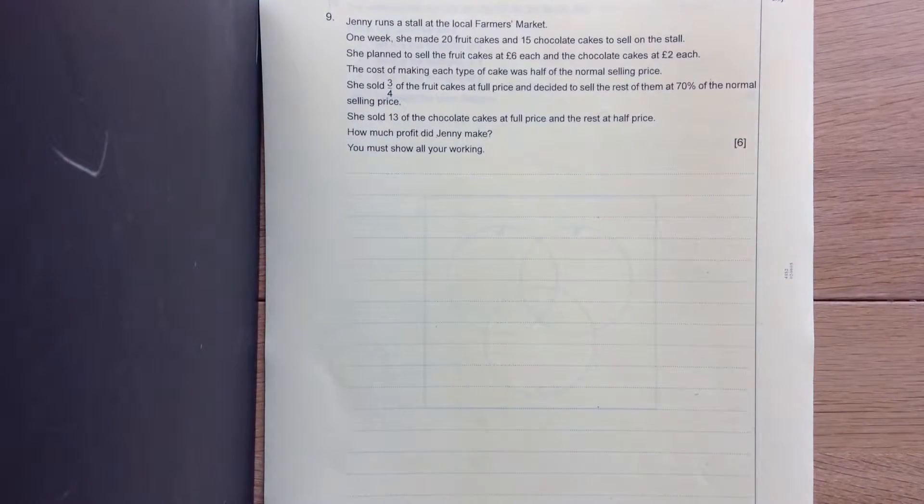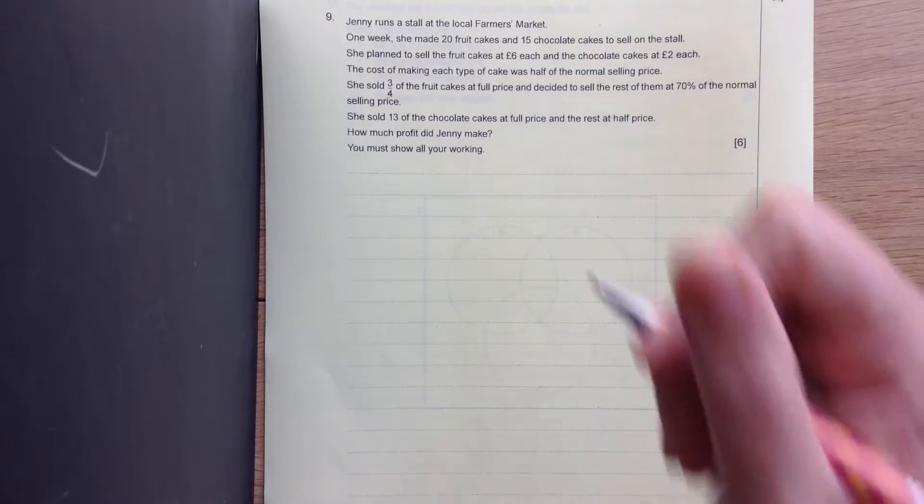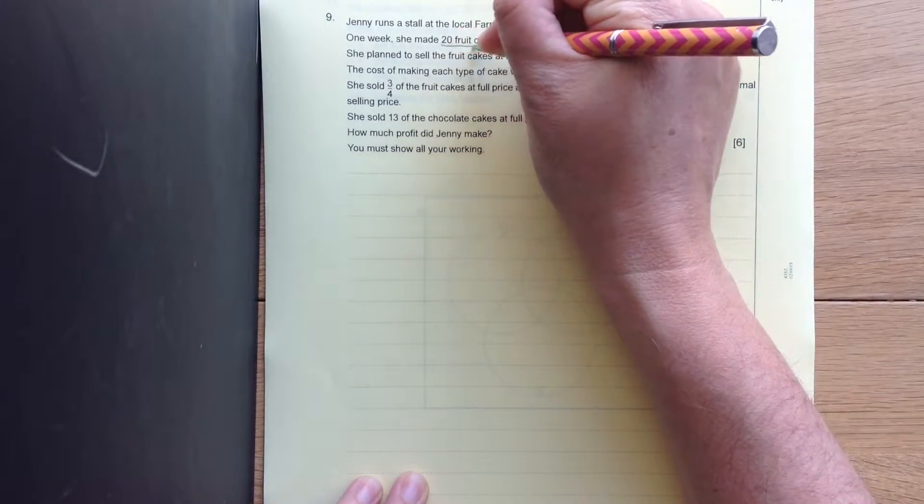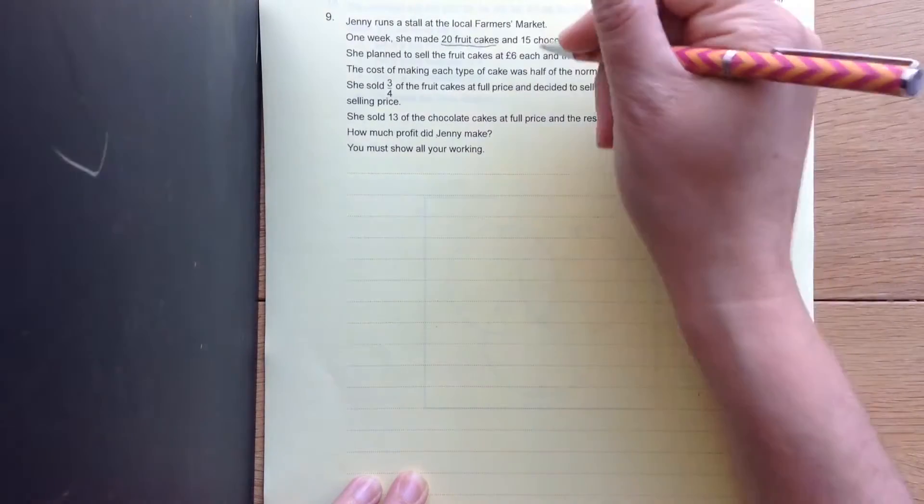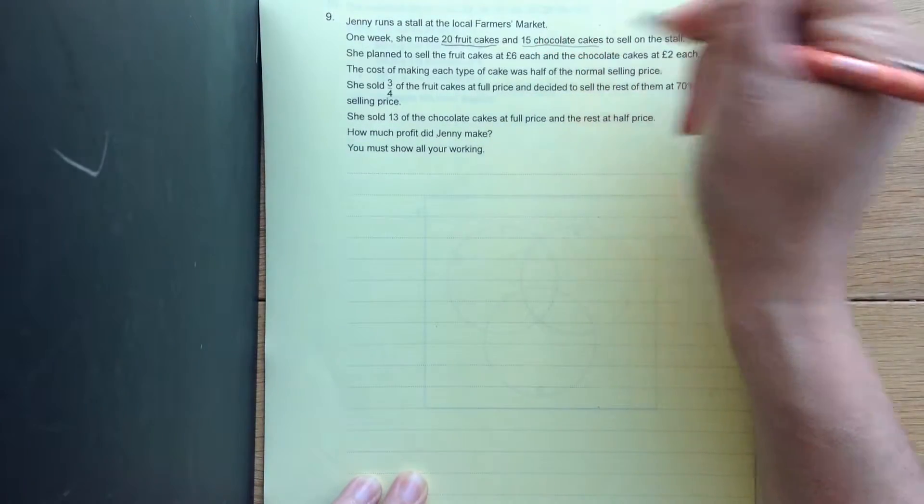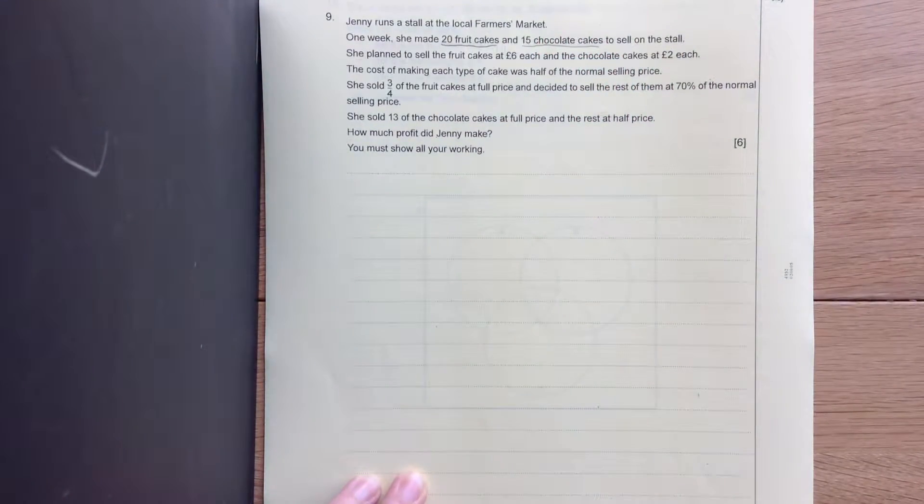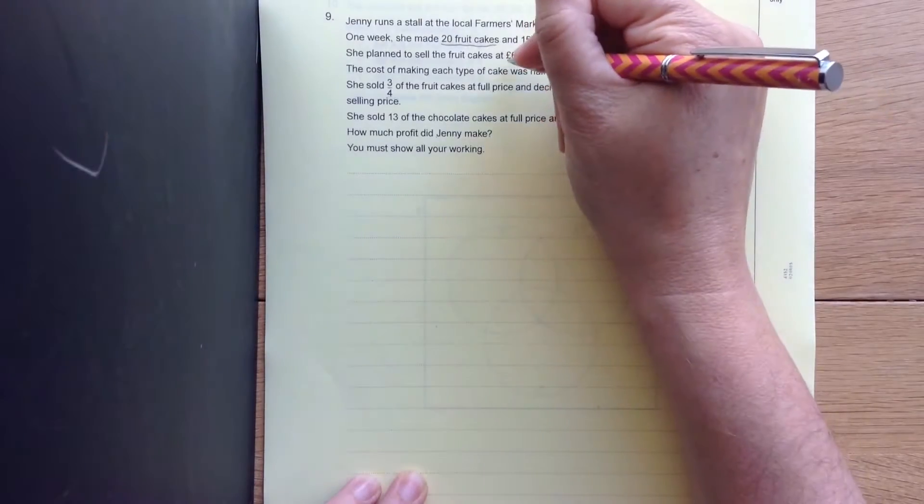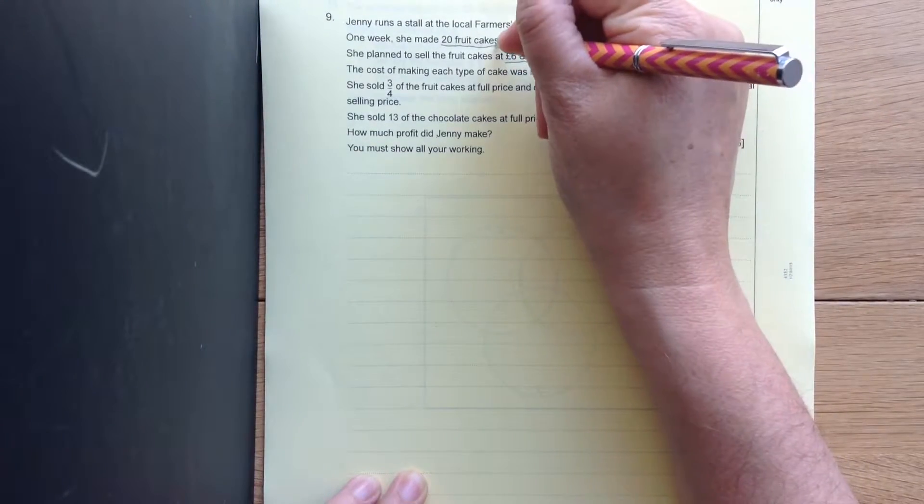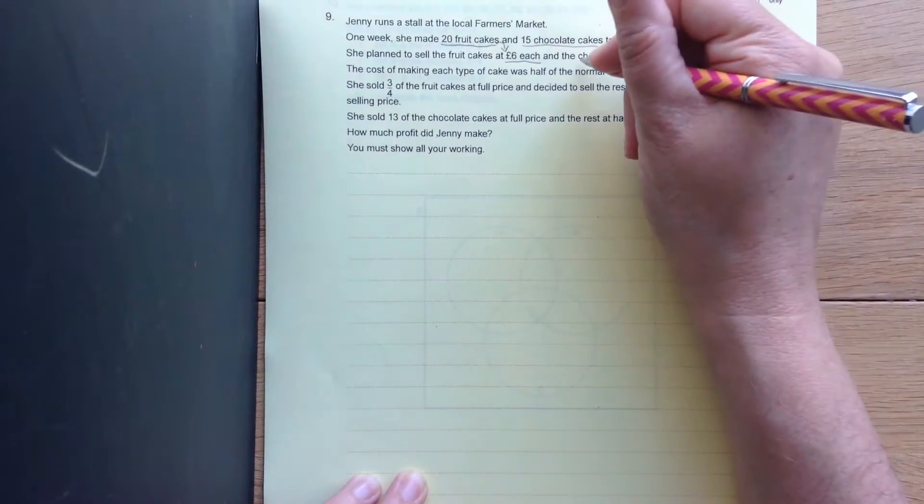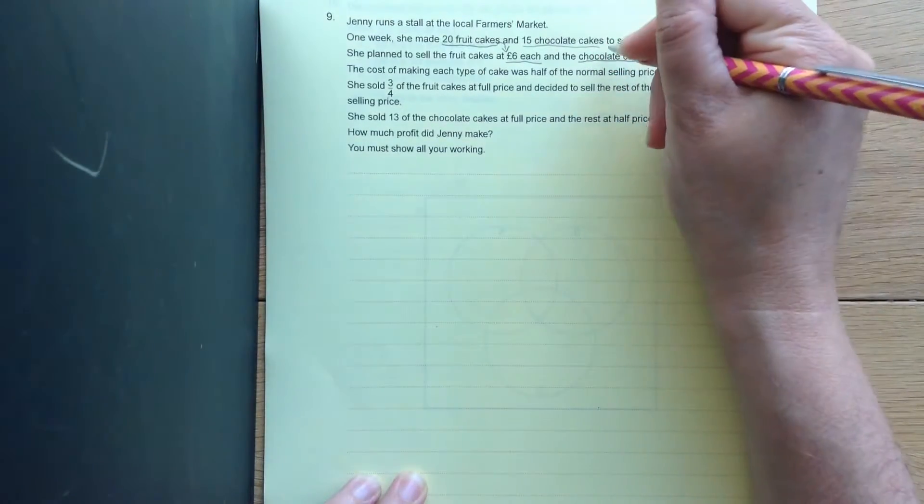Question nine. Jenny runs a store in the local farmer's market. One week she made 20 fruit cakes and 15 chocolate cakes to sell on the store. She planned to sell fruit cakes at £6 each and chocolate cakes at £2 each.